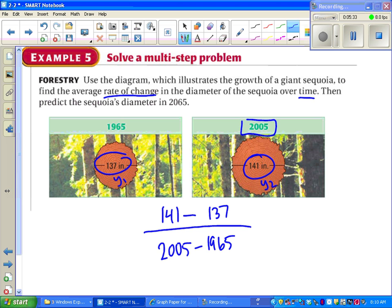Notice I put my Y2 first on top, so I have to put my X2 first on bottom. Y1 second on top, so X1 has to come second on the bottom. We do our subtraction here, and we see we get 4 over 40, which is equal to 1 over 10.